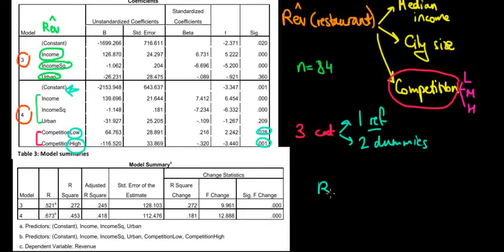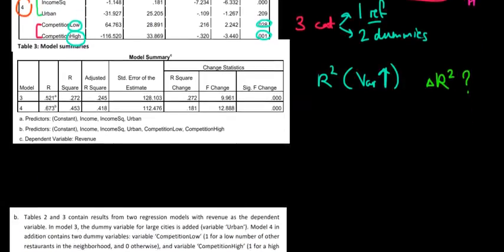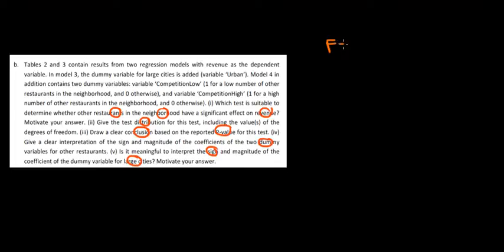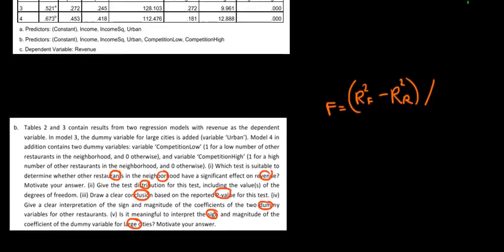R-squared increases when we add more variables, but we want to know whether the change in R-squared is significant — so we perform an F-test. In this F-test we compare the difference between the R-squared of the full model, which has more variables and is higher, relative to the R-squared of the restricted model with fewer variables. We normalize this by the number of variables we're adding, which is 2 additional competition dummies, so the numerator is divided by 2.